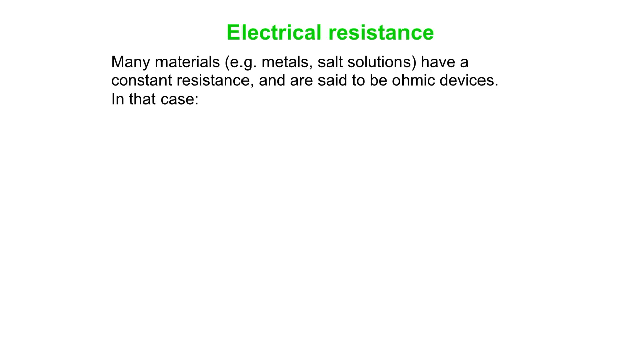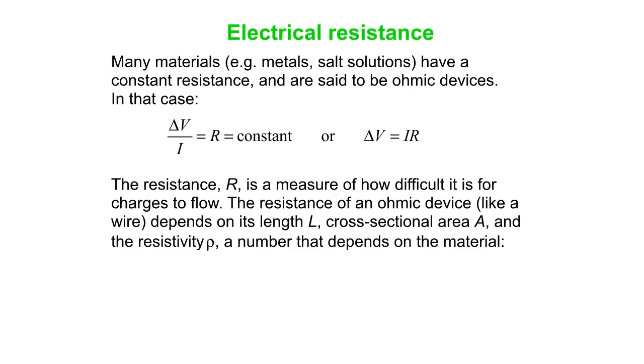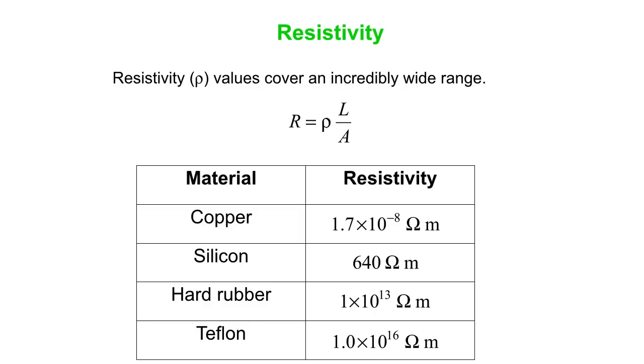Okay, so many materials have a constant resistance. Not all of them, but if you do have a constant resistance then you can use Ohm's Law. And the resistance again is a measure of how difficult it is for charges to flow. And it depends on what we call the resistivity. That's a constant that depends on the material, the length of the object and the cross-sectional area. So if you have a cylinder resisting the flow of charge, more resistance comes from more length or a smaller area or a big resistivity value. So here's some resistivity values. Very large range here, about 24 orders of magnitude. Note that copper is an example of a conductor. Teflon and rubber are examples of insulators and silicon, a semiconductor, is kind of in between.